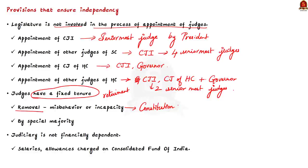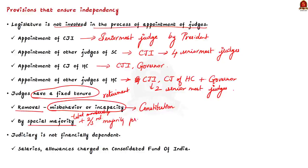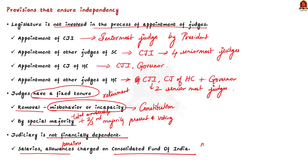A judge of the Supreme Court or High Court can be removed only on the grounds of proven misbehaviour or incapacity. A motion containing charges against the judge must be approved by a special majority in both houses of parliament — that is, majority of total membership of the house and a majority of not less than two-thirds of the members present and voting. Thirdly, the judiciary is not financially dependent on either the executive or the legislature. The salaries, allowances and pensions of judges are not subject to the approval of the legislature; they are charged on the Consolidated Fund of India and are non-votable by the parliament.